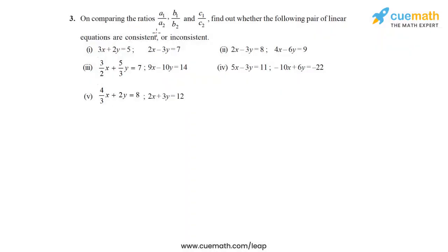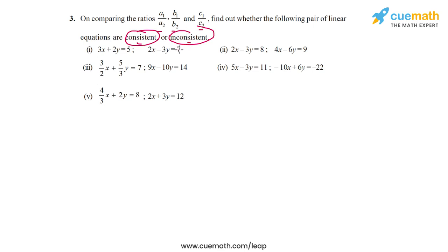Question 3 says: on comparing the ratios A1/A2, B1/B2, and C1/C2 for each pair of equations, find whether the pair of equations are consistent or inconsistent. Let's first discuss the meaning of consistent and inconsistent pairs of linear equations. A consistent pair is any pair that has at least one solution, and an inconsistent pair is a pair that has no solution. Now let's go over the possibilities one by one.